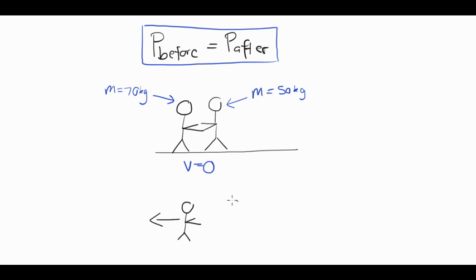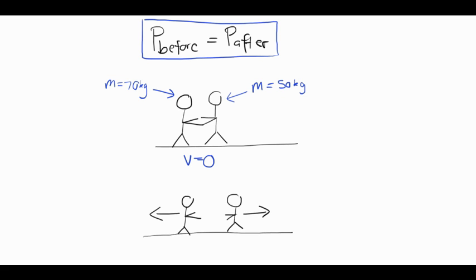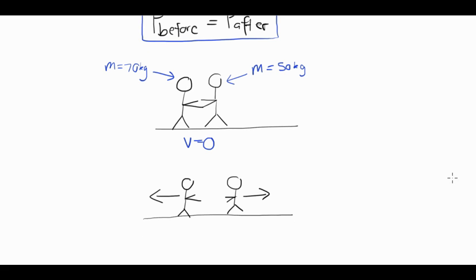The 50 kilogram person will be moving in this direction. Now remember, they are on ice, so we're assuming that friction would be negligible and would not contribute as an external force. Therefore, momentum will be conserved.